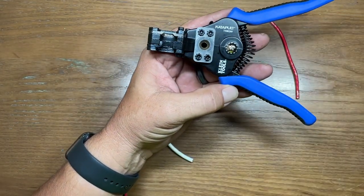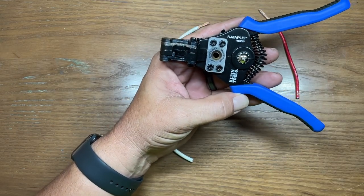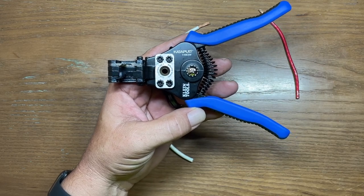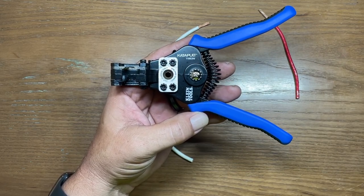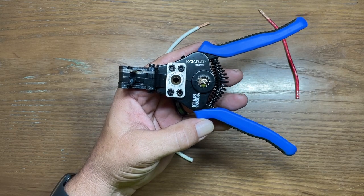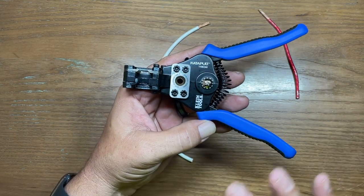The only downside to these particular strippers is the fact that they don't collapse any further than what they are. So putting these in your toolbox or in your truck or a bag, they're a little cumbersome because of their overall footprint.